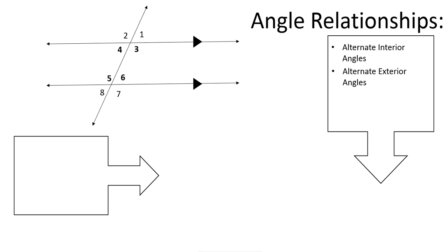Next, I have alternate exterior angles. Alternate exterior angles are on the opposite sides of the transversal, and they are on the outside of the parallel lines. So that would be angles 2 and 7, and angles 1 and 8.